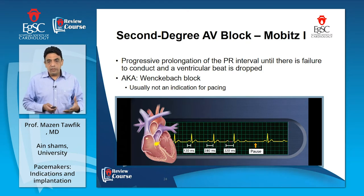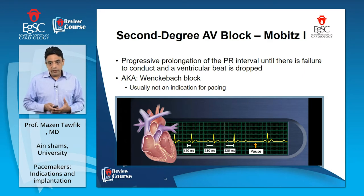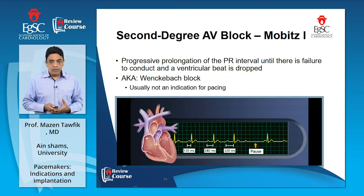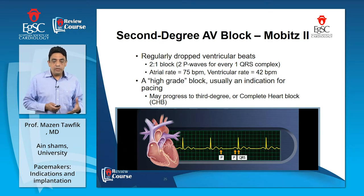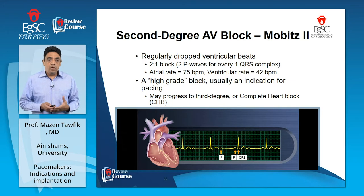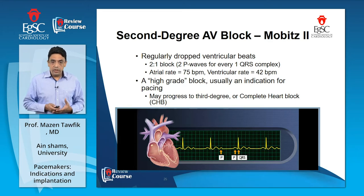Second degree AV block has two types: Mobitz type 1, where there is progressive prolongation of the PR interval until failure to conduct one P wave from the atria to the ventricle. This lower degree of AV block is usually asymptomatic and does not typically need pacing. Mobitz type 2 is a fixed block at the level of the AV node with a fixed rate — 2:1, 3:1, or 3:2 — where the ventricular rate is usually half or one third of the atrial rate. This higher degree of block is persistent and is usually an indication for cardiac pacing.